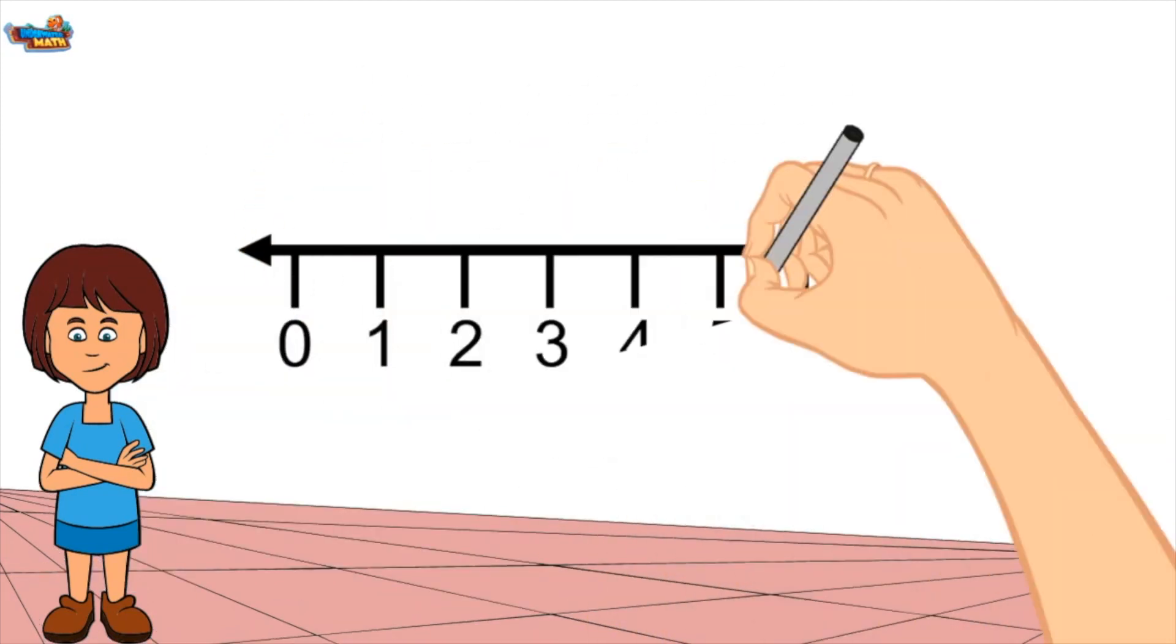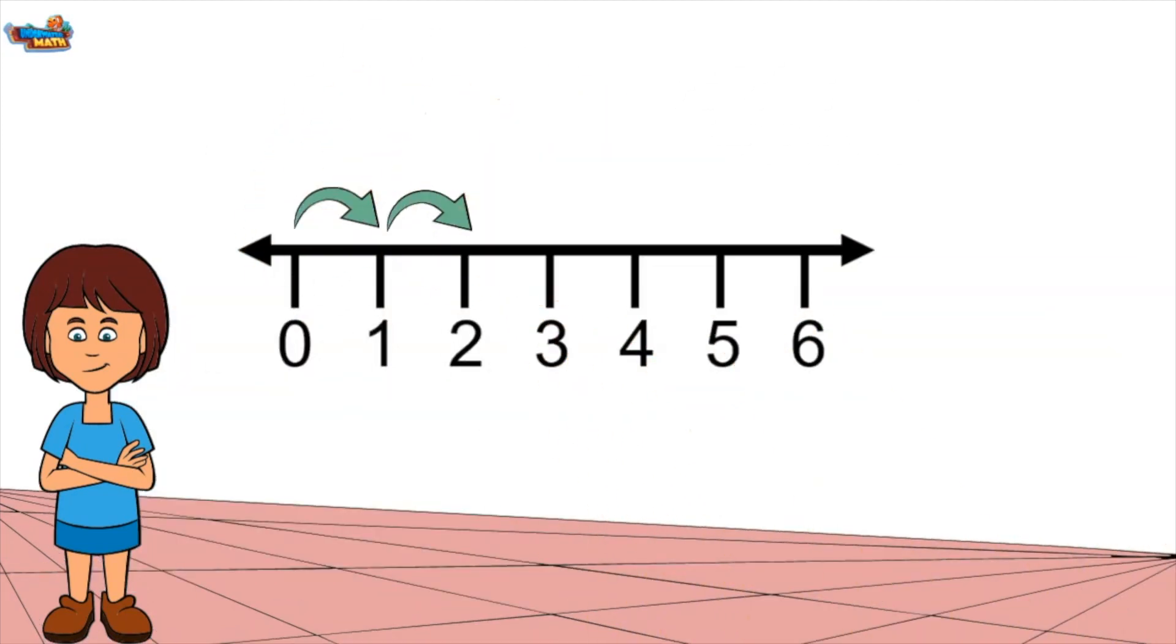Patterns can also be represented on a number line. To find the rule of the pattern we need to determine the value of one hop. On this number line, the arrow hops over one space. The numbers are increasing, so the rule is plus 1.